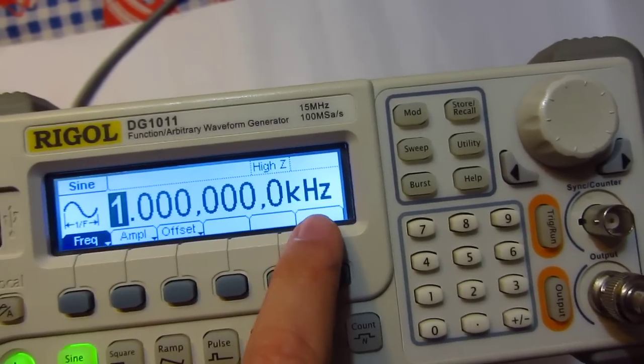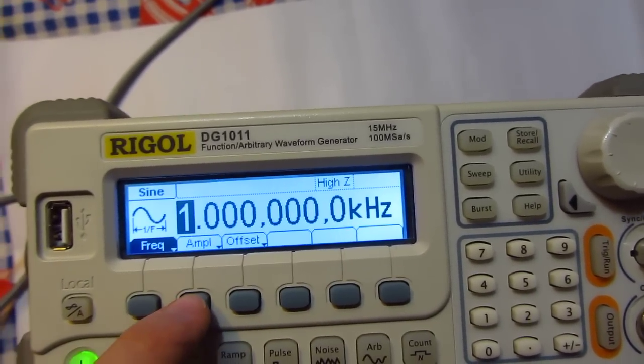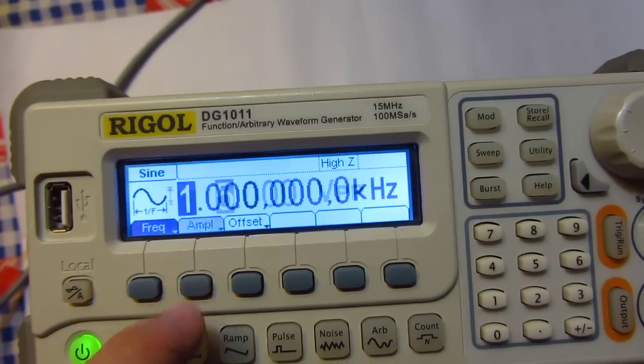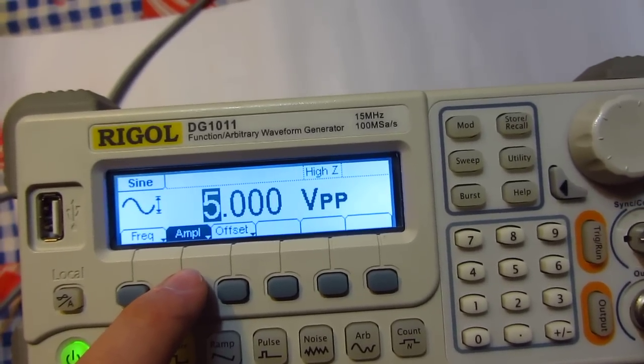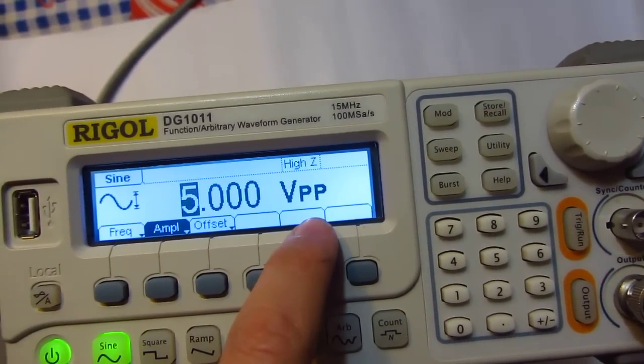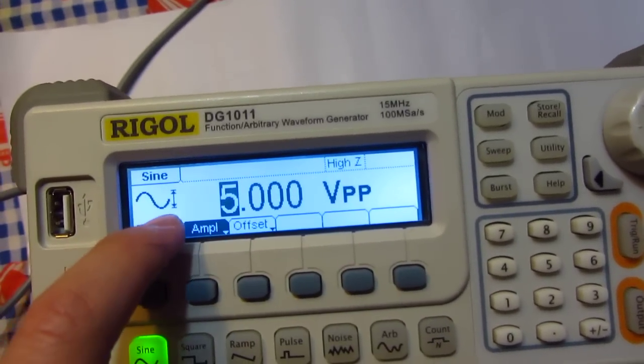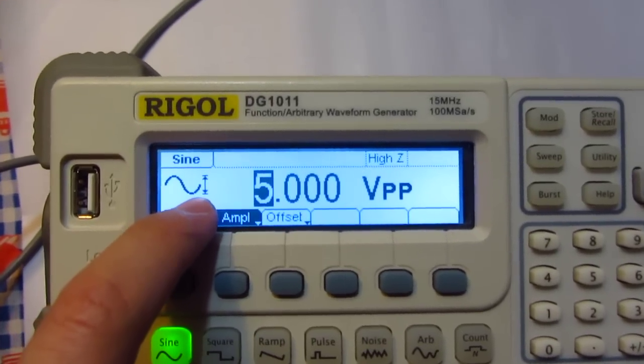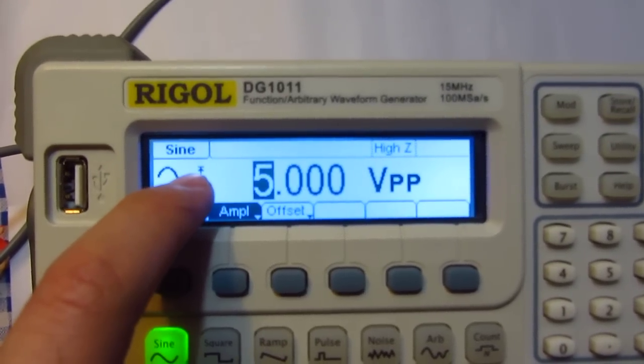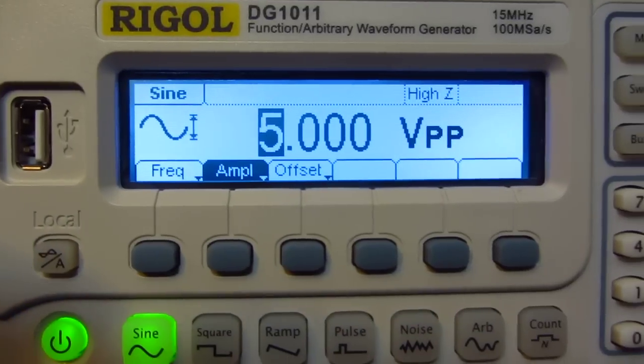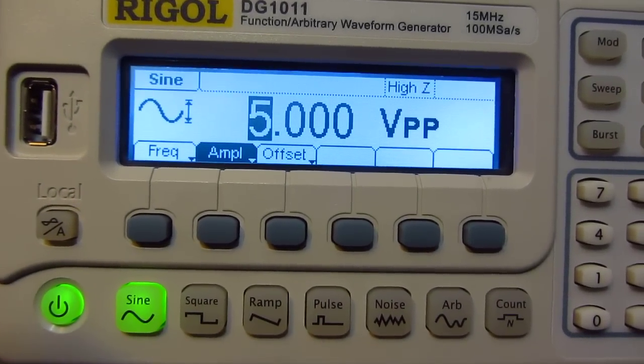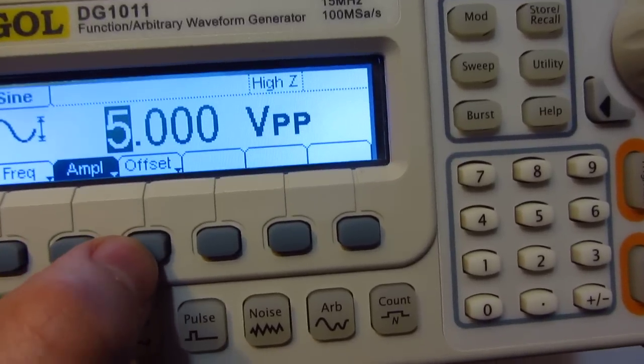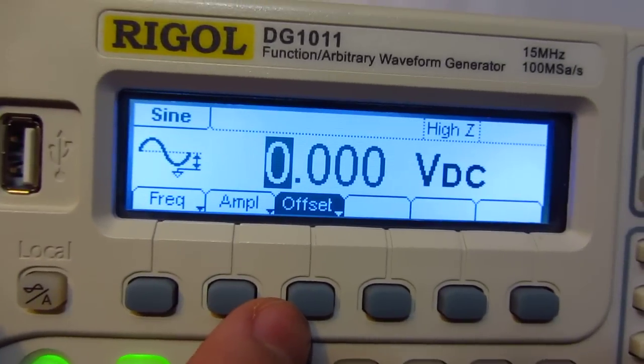The amplitude is set to 5 volts peak-to-peak, from the bottom side of the sine wave to the top part - that is 5 volts. The offset allows us to move the sine wave up or down relative to the ground.